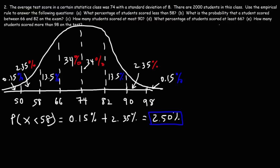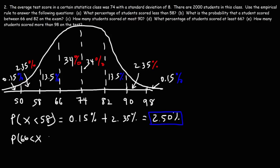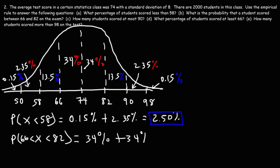Part B: what is the probability that a randomly selected student scored between 66 and 82? We add the percentages in that region: 34% plus 34%, which equals 68%.